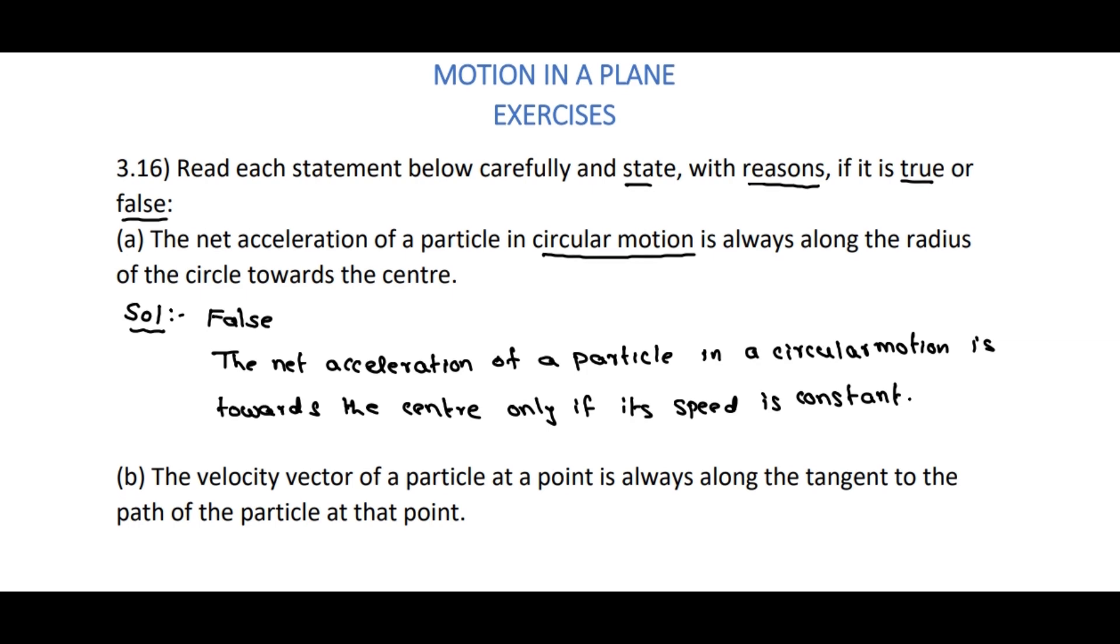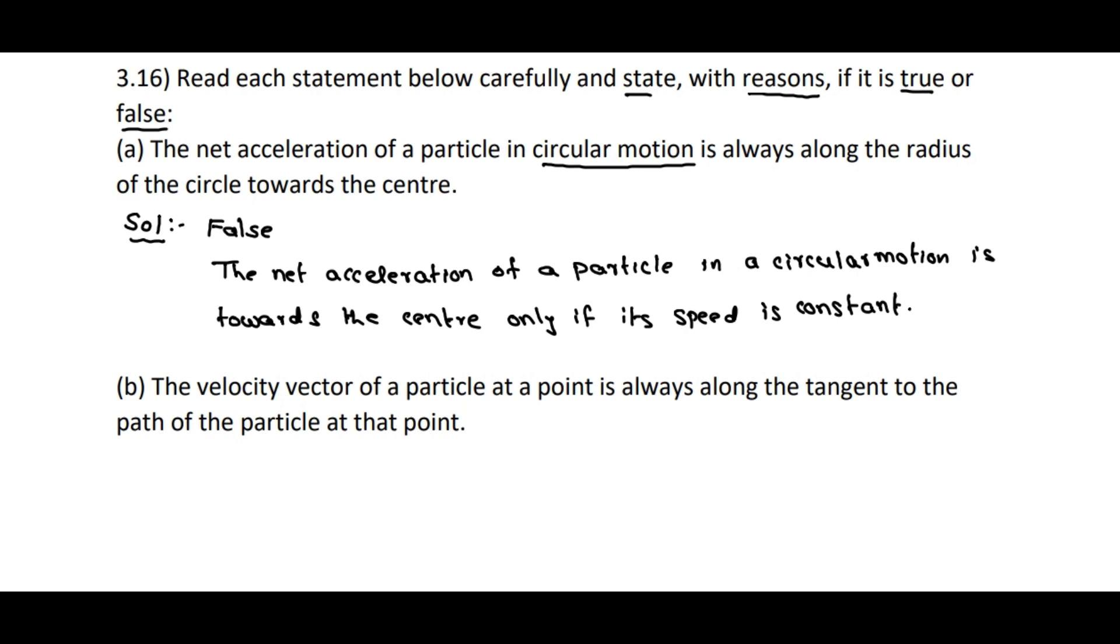Coming to B. The velocity vector of a particle at a point is always along the tangent to the path of the particle at that point. Here, the answer is true.